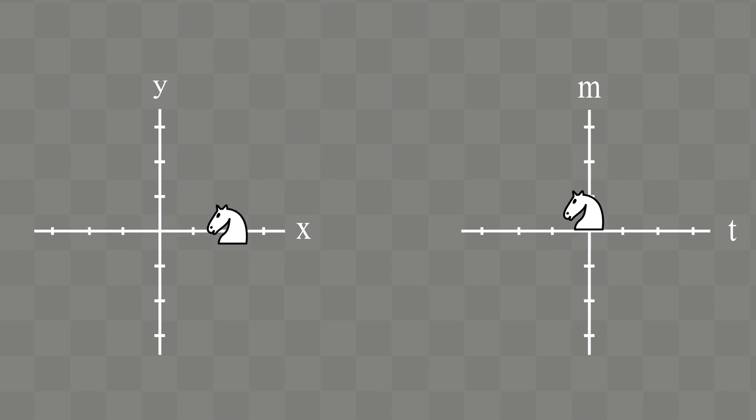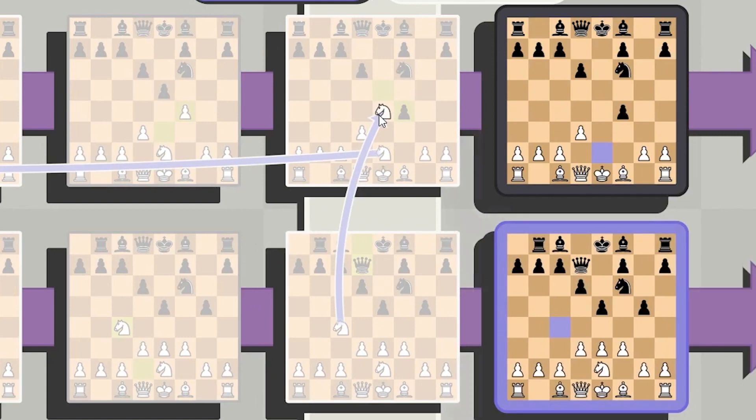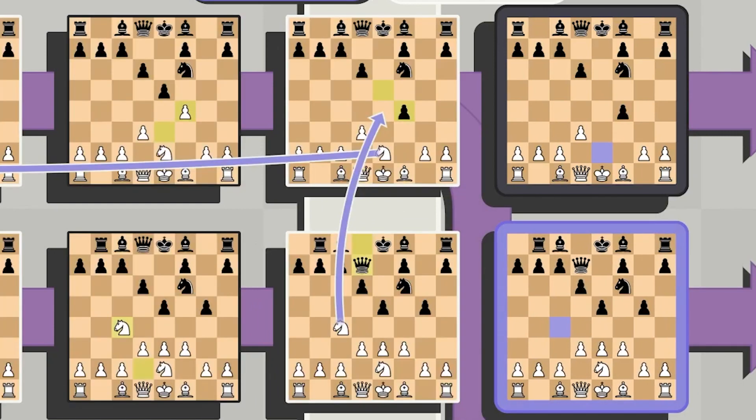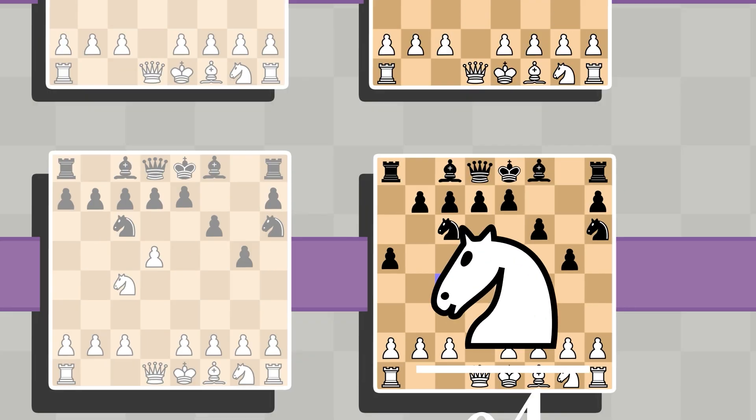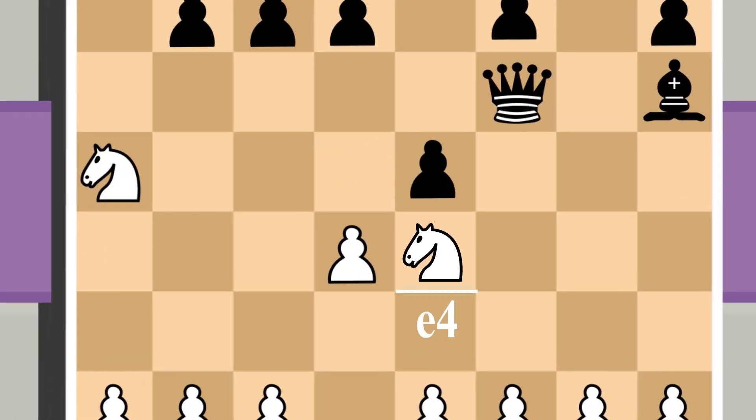You can move twice in X and once in multiverse, like this. When jumping across boards, you maintain your position but switch to a new board. So, if my knight was at C4 and I moved it twice in X and once in multiverse, it would end up at E4, but one board above its original board.